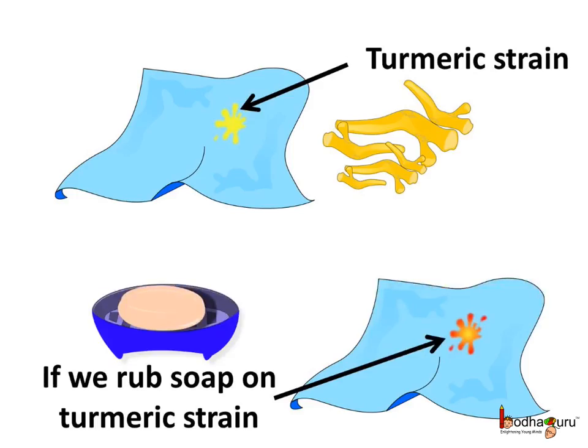We generally remove stains from clothes by rubbing soap on them. But your mother doesn't remove turmeric stains that way. Do you know why? If we try to remove turmeric stains this way, then that stain will change color from yellow to red. Then if we rub lemon onto it, that red stain will regain its yellow color — it becomes yellow again.